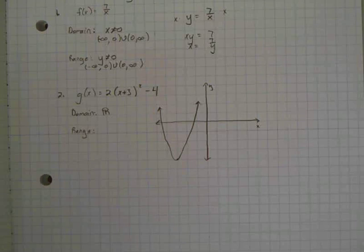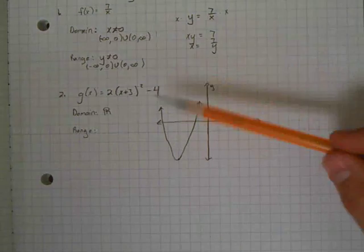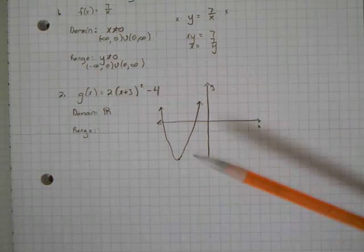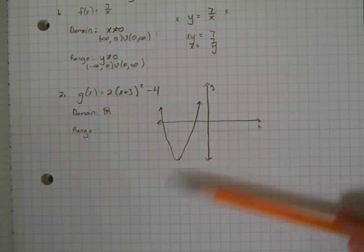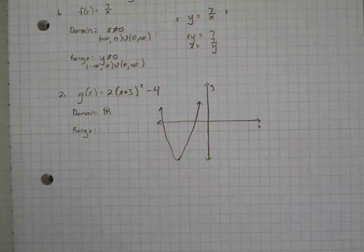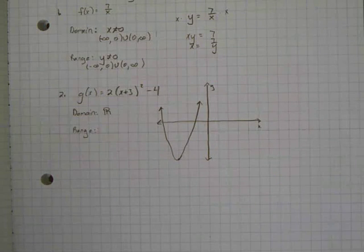And again, I'm looking at the y values for the range. What are the possible y values? Well, by looking at the graph, you can see that the y values do not go down forever. There are certain y values that we're not going to have because the graph doesn't go below this point right here. So the question you need to ask yourself is, what is my smallest possible y value? And then what other y values are possible?